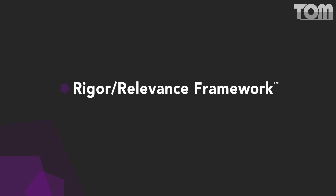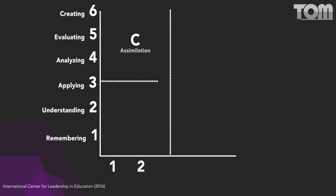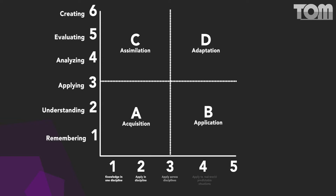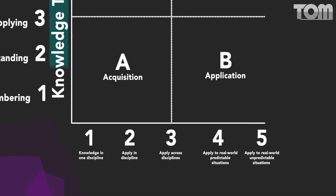The first one is the Rigor Relevance Framework. This is a tool developed by the International Centre. It examines curriculum, instruction, and assessment along two dimensions of higher standards and student achievement. When applied to technology, if we think along the vertical horizon, we look at knowledge — do we consume it, which is at the lowest level, or do we move into evaluation of that learning and the learning experiences?